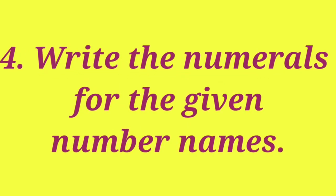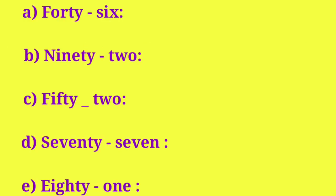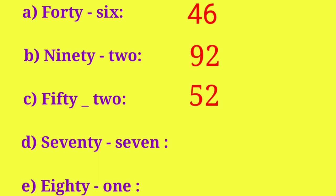Let us do the 4th bit children. Write the numerals for the given number names. Here they gave number names and for that you have to write numerals. First one — read the number name: F-O-R-T-Y S-I-X — 46. Here two places are there: tens and ones. So 4 tens, 6 ones — that is 46. And the next one: N-I-N-E-T-Y T-W-O — 92. 9 tens, 2 ones. The numeral is 92. And the next: F-I-F-T-Y T-W-O — 52. The numeral is 52.